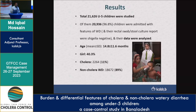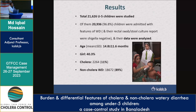During the study period, we had around 21,626 children. We excluded children with watery diarrhea where Shigella culture was negative, and finally had 2,936 children. Their mean age was 14.8 months with a standard deviation of 11.6, and around 40% were girls. Cholera was isolated from 11% of the children; the remaining 89% were Shigella-negative and cholera-negative but had watery diarrhea.